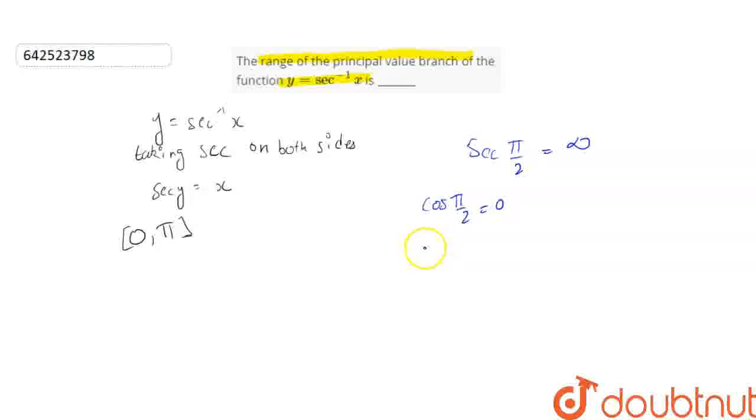Which gives secant pi by 2 equals 1 by cos pi by 2, which is equal to 1 by 0, that is not defined. So we will subtract this pi by 2 from its principal value branch and this is our answer.